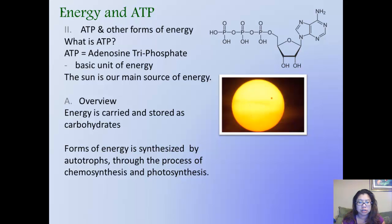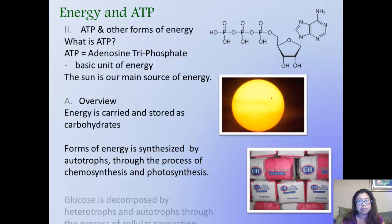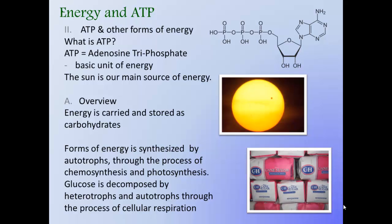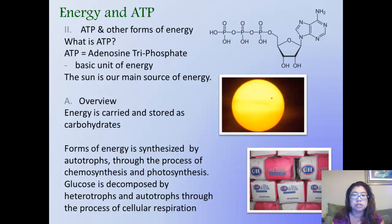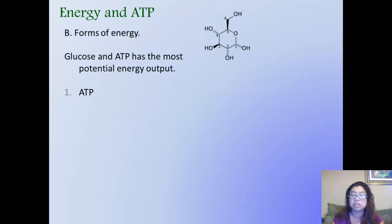As you can tell that glucose is decomposed. Once it's made, glucose is a common form of energy stored as a type of carbohydrates. It is decomposed by heterotrophs and autotrophs through the process of cellular respiration. Glucose and ATP has the most potential energy output, and it's very efficient.